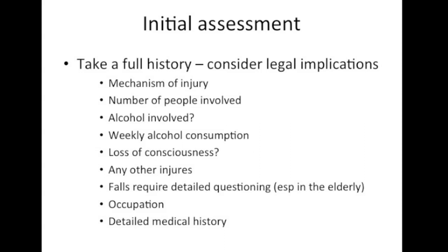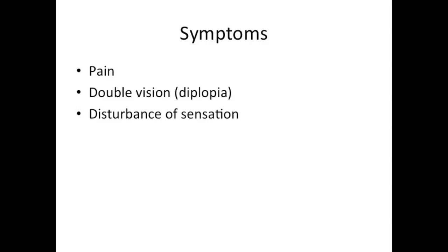Your history should be documented completely and accurately. You must not speculate and only document what the patient tells you, your examination findings, and the results of medical tests. Bear in mind that at a later date you might be requested to write a police statement regarding your findings and even be a witness of facts at a court hearing. The classical symptoms are pain, double vision or blurred vision, and altered sensation in the distribution of the infraorbital nerve, which manifests as numbness to the cheek, lateral aspect of the nose, and maxillary teeth on the ipsilateral side of the fracture.